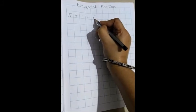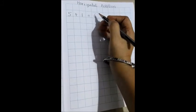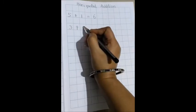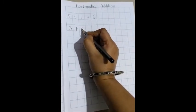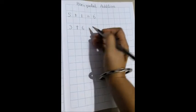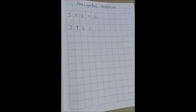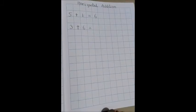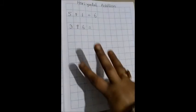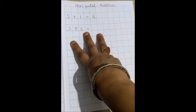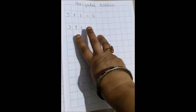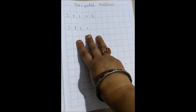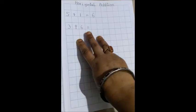Now moving on to the next one. 3 plus 6 equals to. Which is the bigger number? 6 is the bigger number. So 6 will be in your mind and how many fingers out? 3 fingers out. So after 6 what will come? 7, 8, 9. So we will write 9 out here.